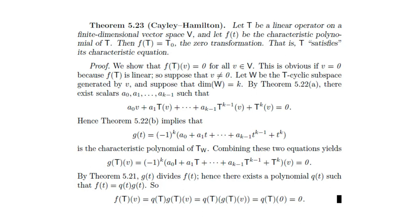We have discussed that the characteristic polynomial of the restricted map will divide the characteristic polynomial of the linear operator T. So g(T) divides f(T), and hence there exists some polynomial q(T) such that f(T) equals q(T) times g(T). So f(T) applied to v equals q(T) times g(T) applied to v, which equals q(T) applied to zero, since g(T) applied to v is zero using the first equation.